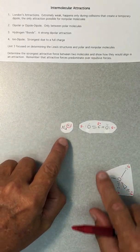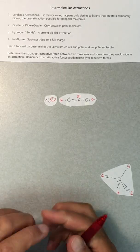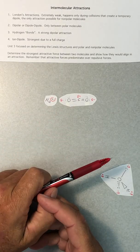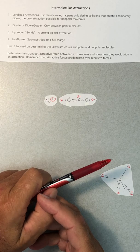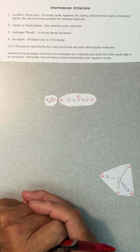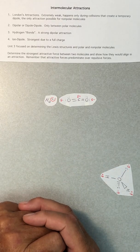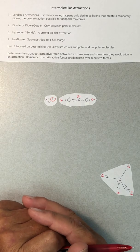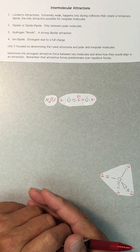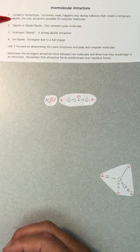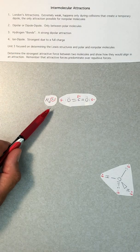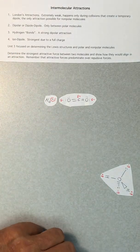What about an ion and a nonpolar molecule? Does CO₂ dissolve in sodium chloride? No. But do they attract each other when they collide? Yes — all particles experience London's attractions during a collision. So the strongest attraction between an ion and a nonpolar molecule is London's attractions.